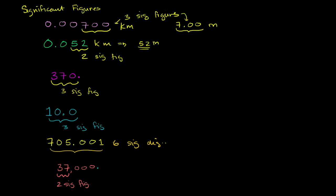Based on the examples in the last video, let's see if we can come up with some rules of thumb for figuring out how many significant figures or how many significant digits there are in a number or a measurement.